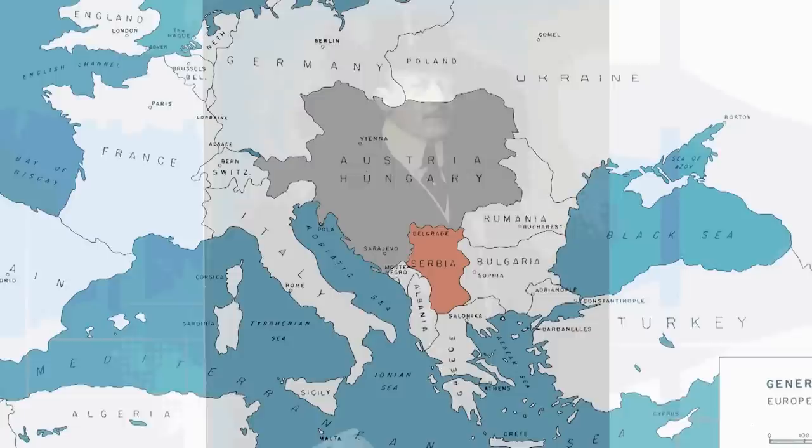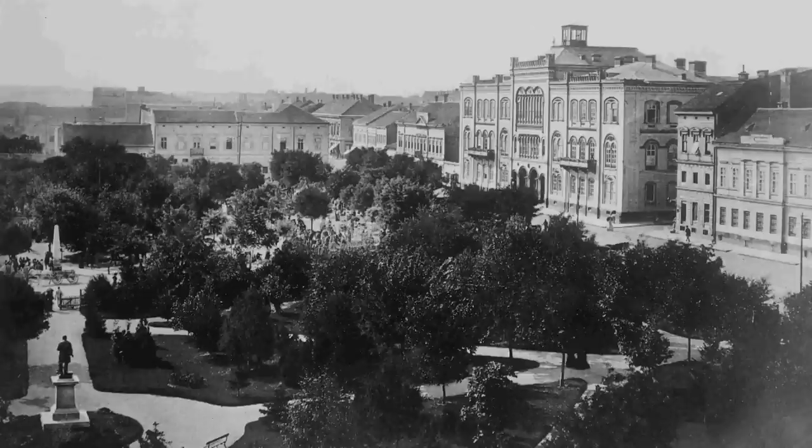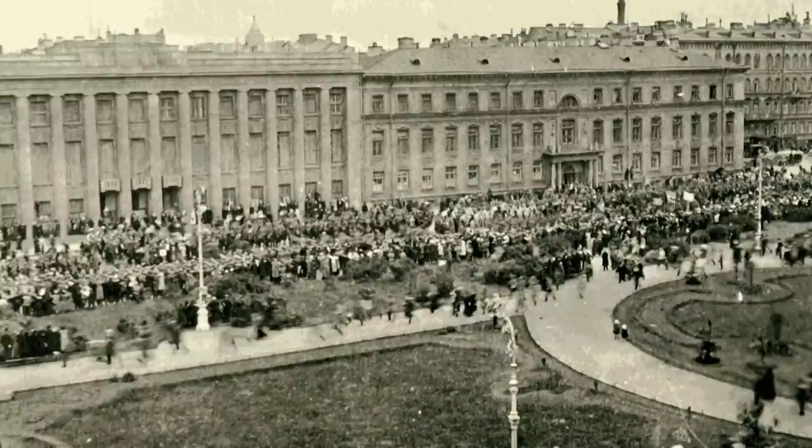Austria-Hungary waits three weeks and then presents Serbia with an ultimatum. Foreign Minister Count Leopold von Berchtold crafts the ultimatum to be unacceptable, demanding Serbia surrender its sovereignty as an independent state to Austria. The 15-point ultimatum is delivered to Belgrade on 23 July with a 48-hour time limit. The Serbian government agrees to comply with many of the terms but refuses to surrender sovereignty to Austria-Hungary. Serbia mobilizes its forces for war, gives its reply, and petitions Russia for support.